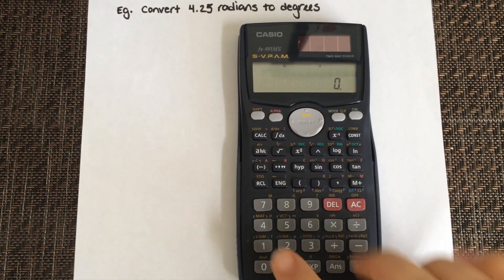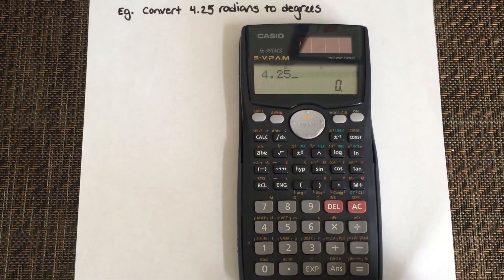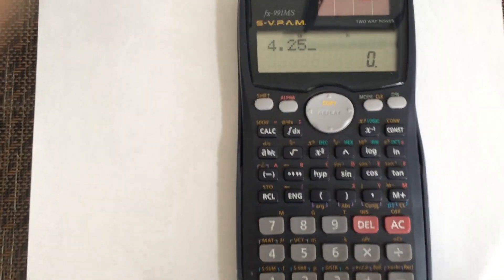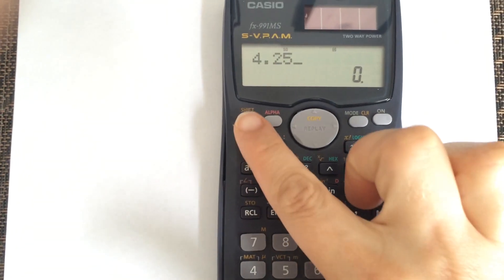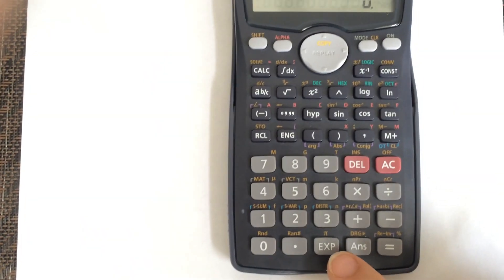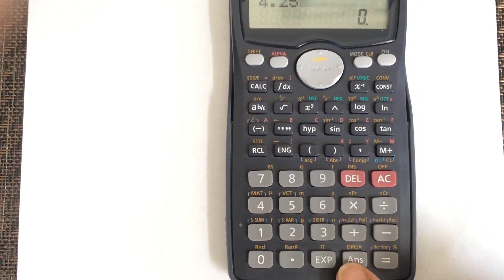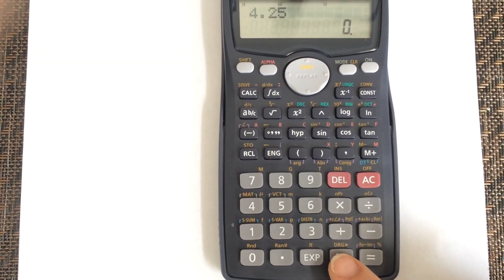Then you can enter the value, so you're going to enter 4.25 because that's what I'm converting. Select your shift button. Then on top of your answer key you'll see DRG, so that's what we're selecting - the answer button.